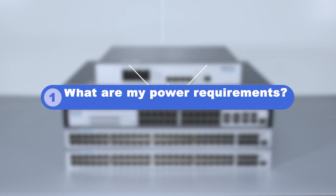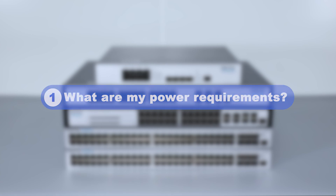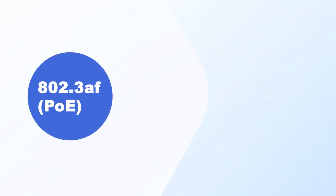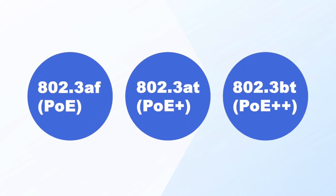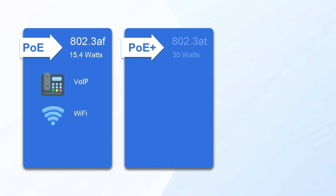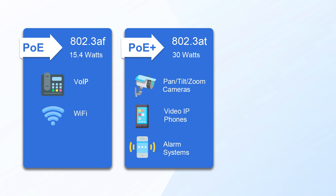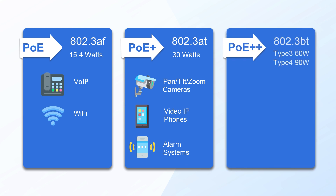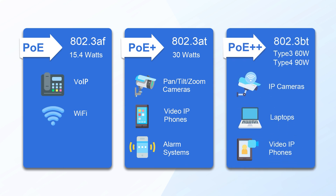What are my power requirements? The power supply standards of PoE switches are divided into three types. 802.3AF provides up to 15.4 watts per port, while 802.3AT can deliver up to 30 watts. 802.3BT can provide up to 90 watts of power.